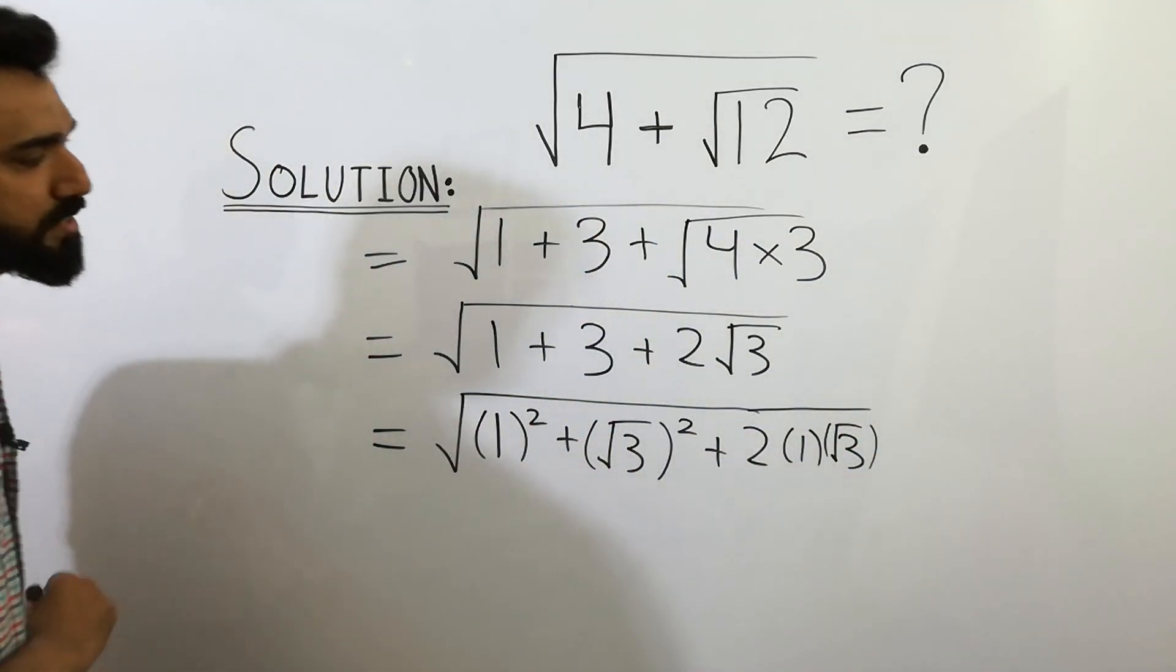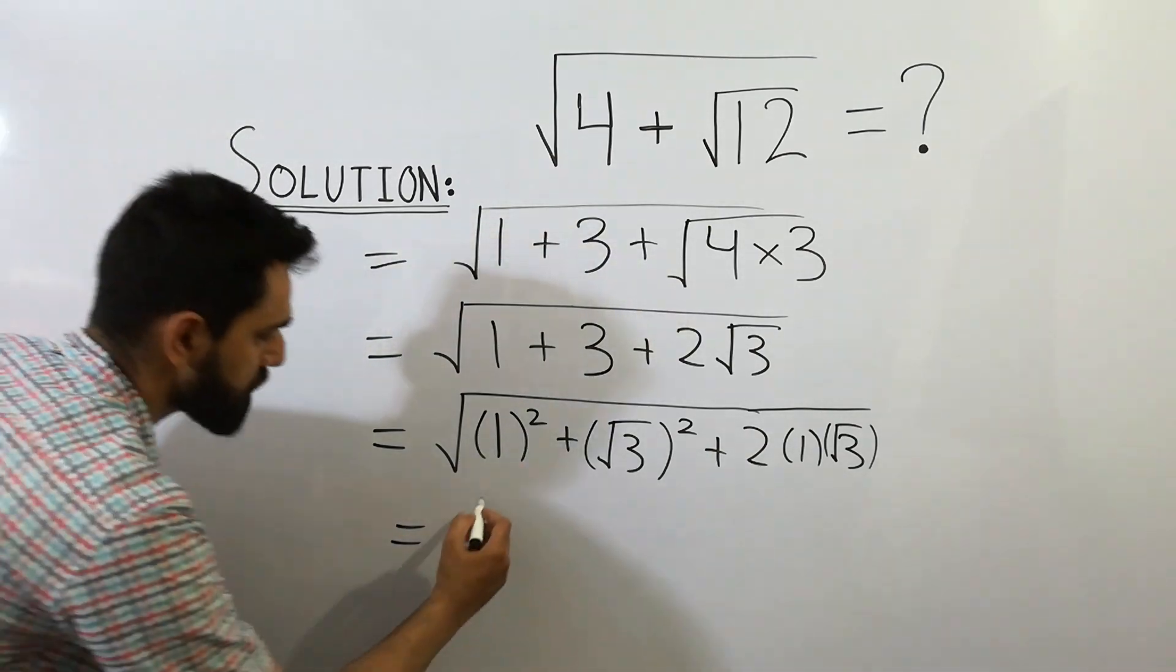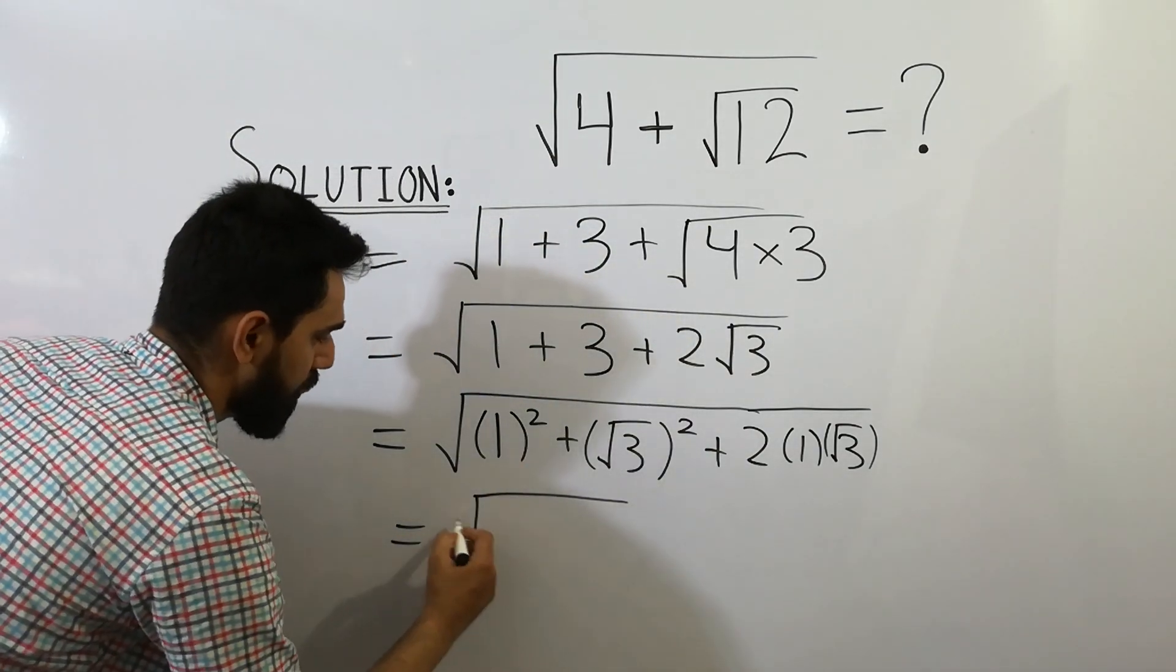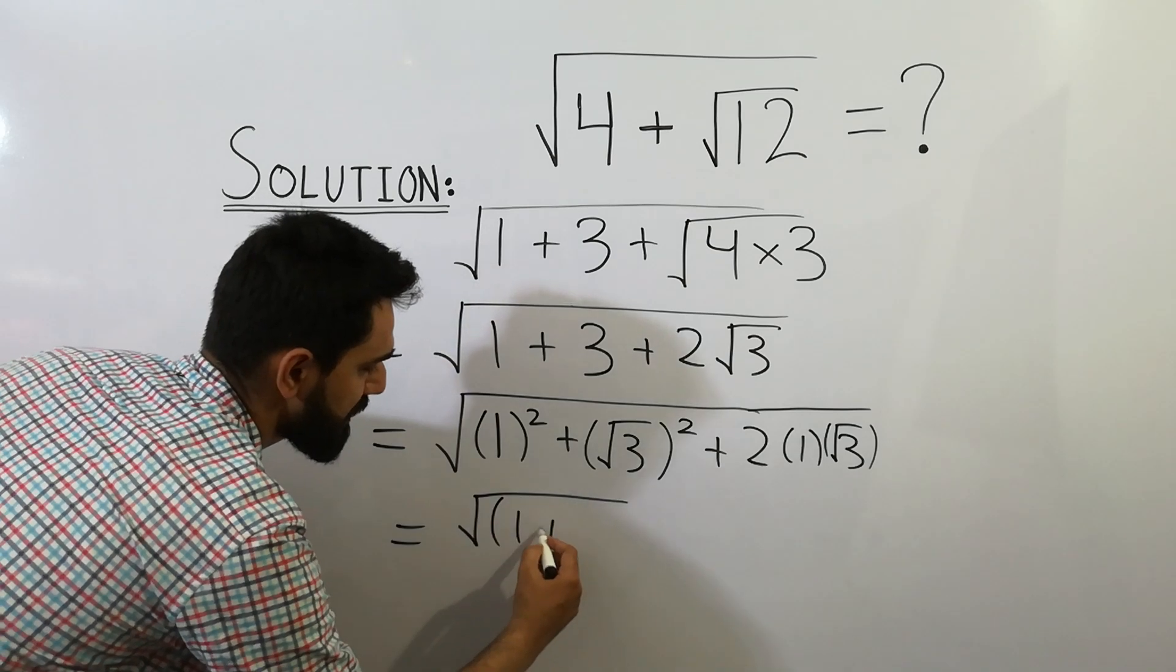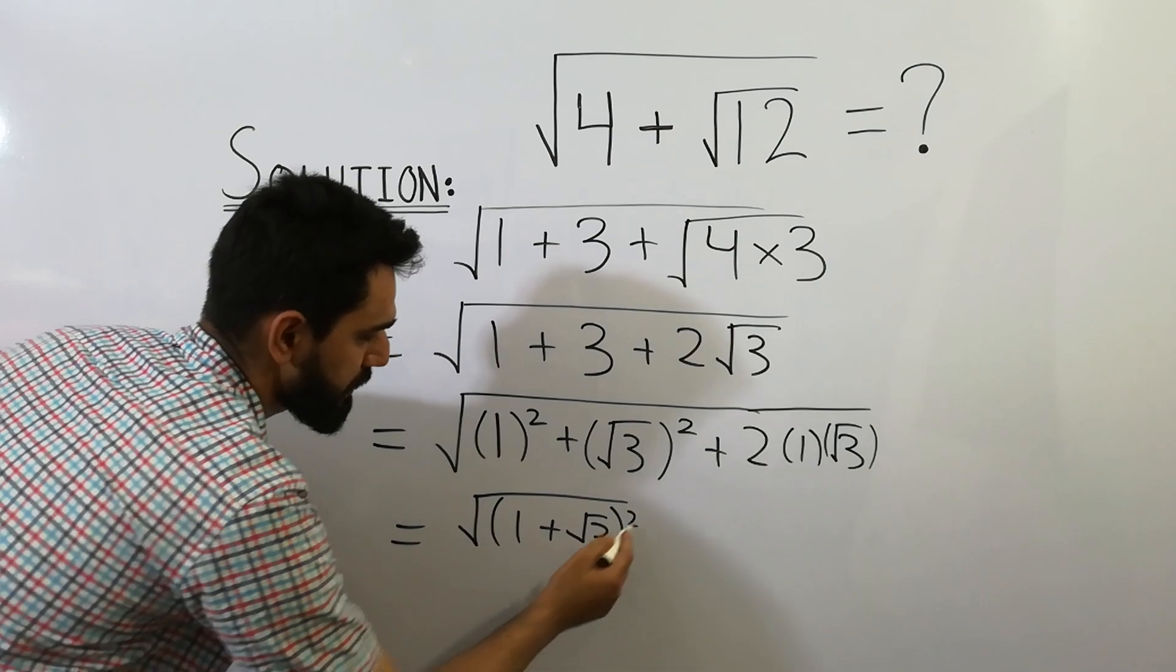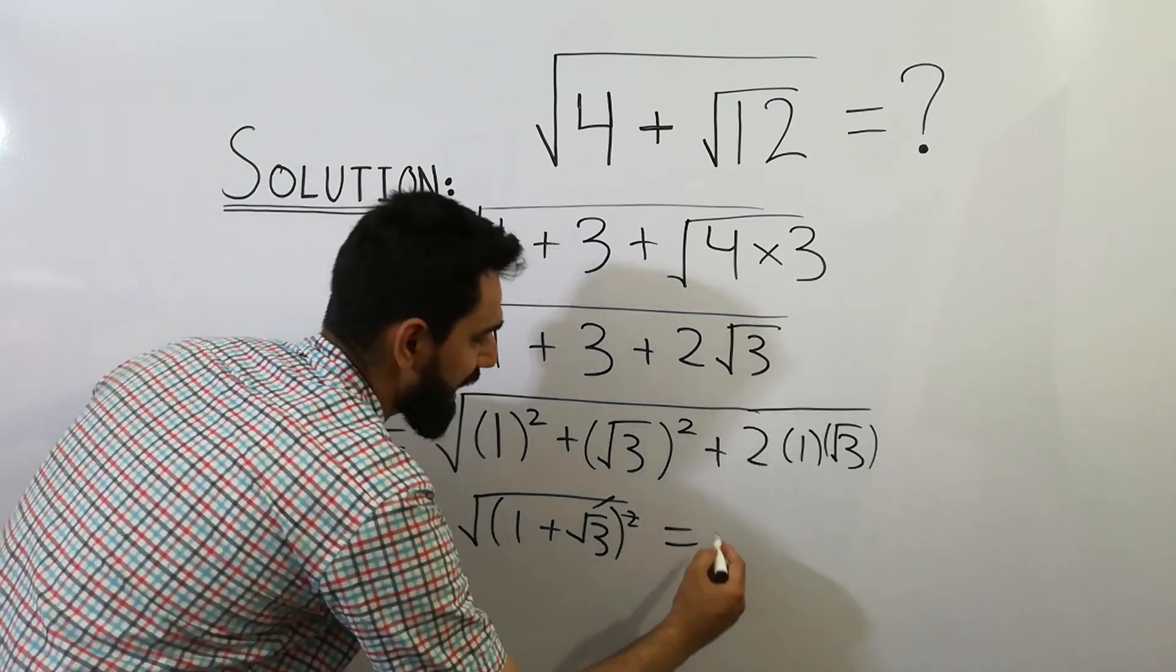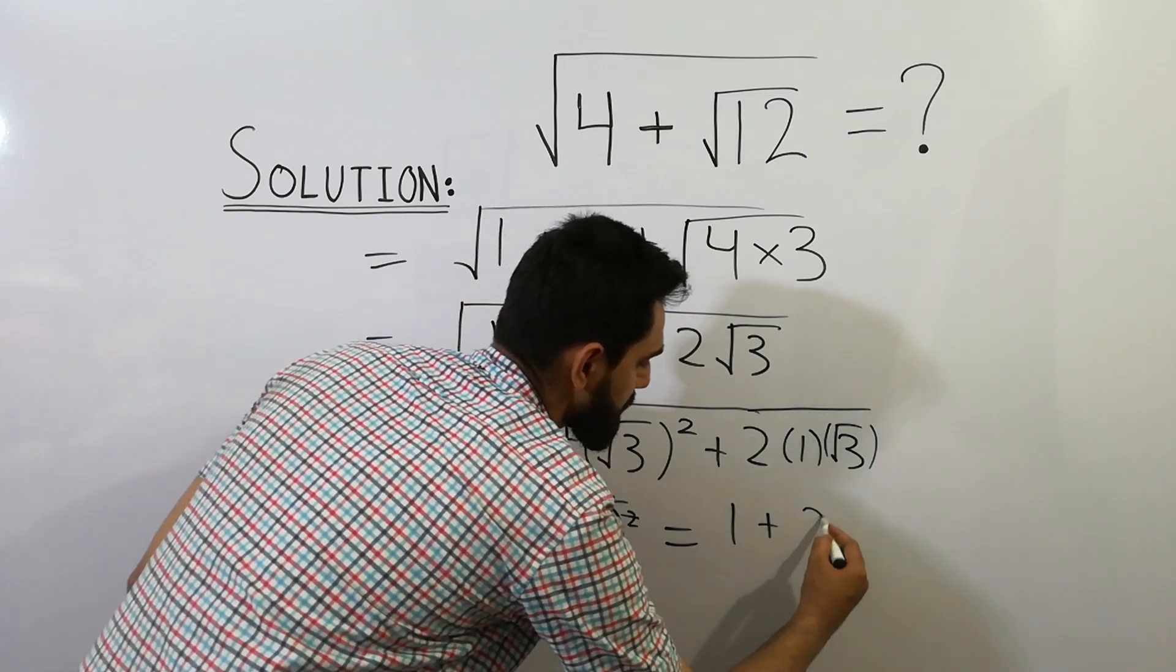So it equals a plus b whole square: 1 plus square root of 3, whole square. The square will be cancelled from the square root. We get 1 plus square